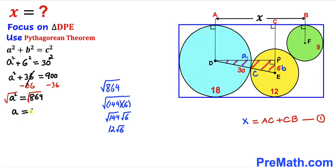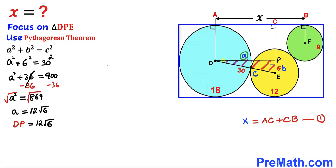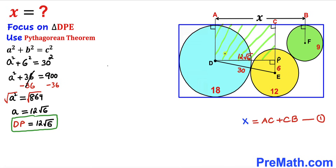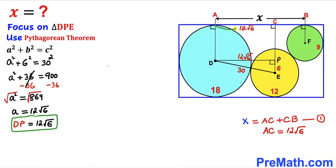So the side length DP turns out to be 12√6. Now focusing on rectangle DPCA, opposite sides are congruent, so if DP is 12√6, then side length AC must also be 12√6. Thus our length AC turns out to be 12√6.